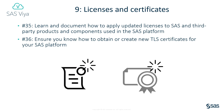Number 9: Licenses and certificates. Task number 35 describes where you can learn about how to apply updated licenses to SAS and third-party products and components used in the SAS platform. You should note how to perform this procedure on your site as it's usually something you only do once a year and it can be easy to forget how to do it. Also, remember to allow enough time to get your new license before the existing one runs out. Ensure you know how to create new TLS certificates for your SAS platform. Task 36 in the paper discusses that.